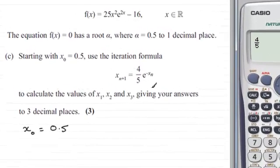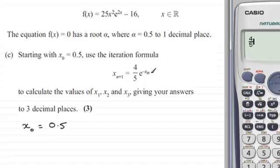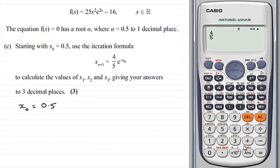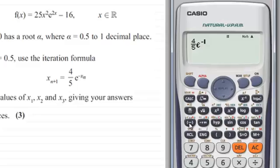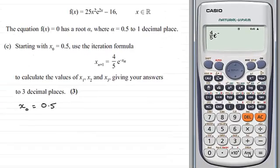And just enter e to the power minus. And wherever we've got x_n here, we just hit the answer key. So, to get the exponential function on this calculator, I need to press shift, and just press that button, enter the minus, and then just press answer.